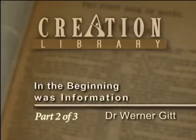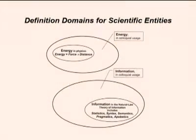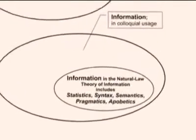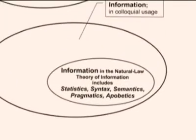Information in the natural law theory of information includes five levels: statistics, syntax, semantics, pragmatics, and apobatics.